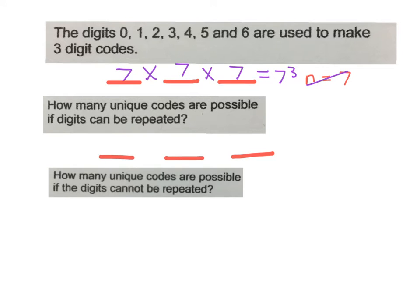The next one says how many unique codes are possible if the digits cannot be repeated. So on the first line I can have seven digits times. And now I have used one of the digits. This becomes six. Now I've used two of my seven digits and there's only five left. When I times this out, I'll get 210 possible codes.